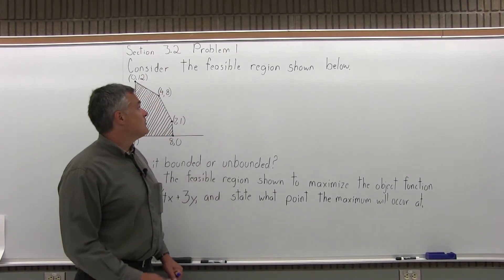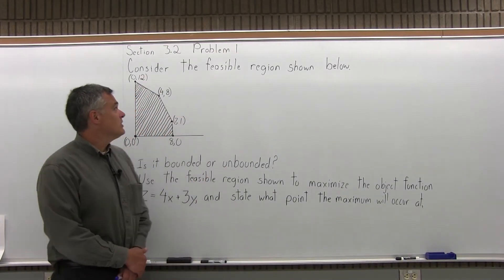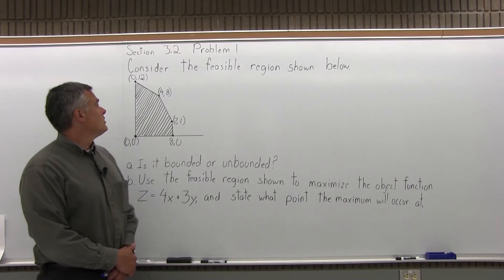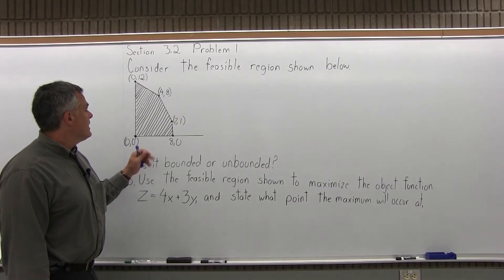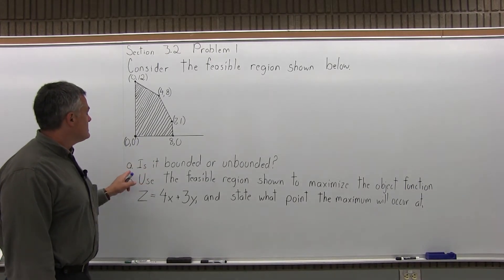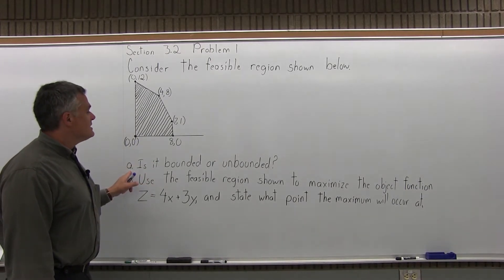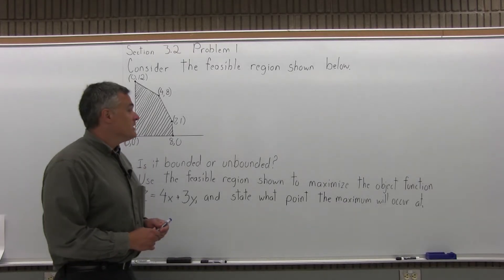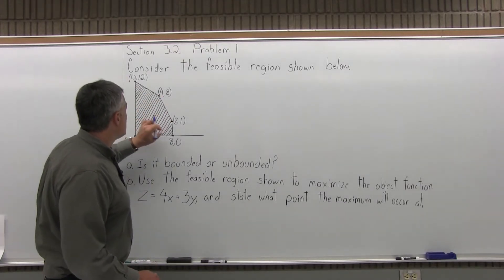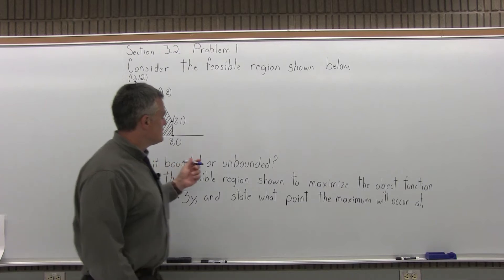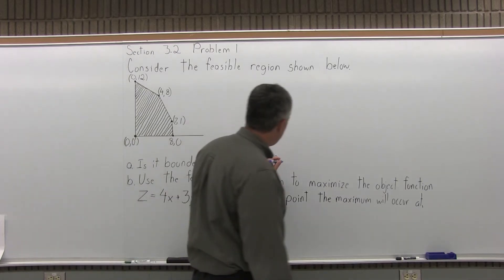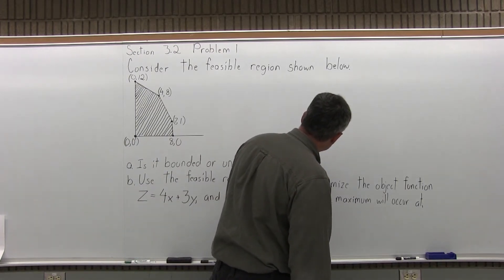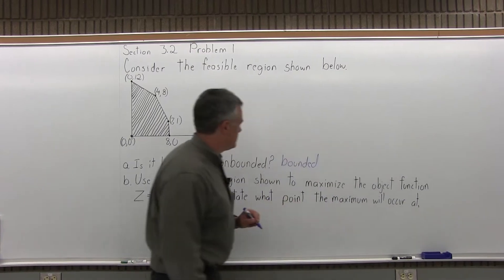This is problem number 1 from section 3.2. It says, consider the feasible region shown below, and it's drawn for you. Part A says, is it bounded or unbounded? Well, the answer is it's bounded because it's totally contained. It does not go on forever. So the answer to part A is this feasible region is bounded.